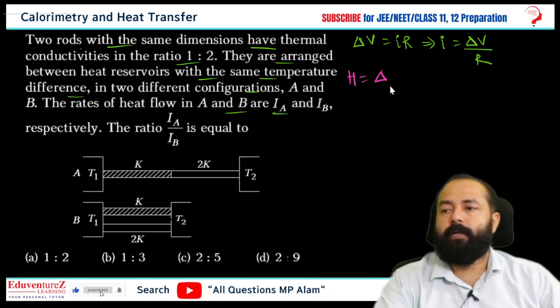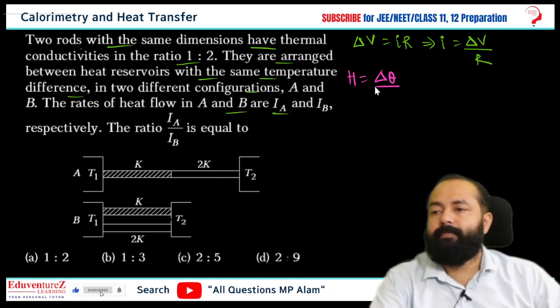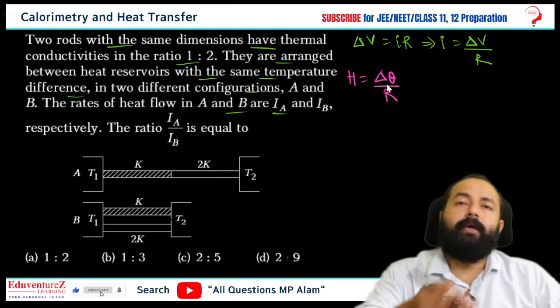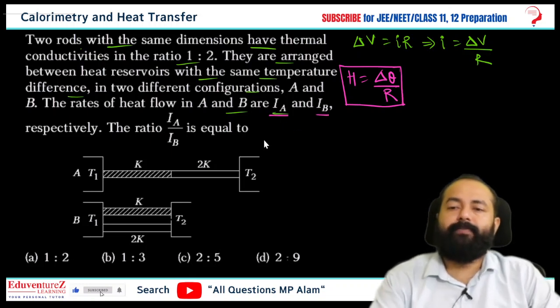Heat current equals delta V potential difference. So here is delta theta, the temperature difference. There is electrical resistance and thermal resistance. So here is the formula of heat current, which means IA and IB is heat current, or rate of flow of heat.